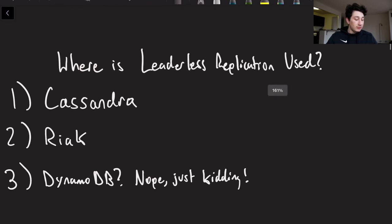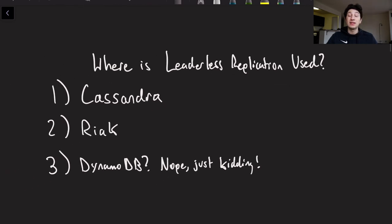So let's move on. Where do we actually use leaderless replication? Again, I'm going to try and make an emphasis on actually pointing out some systems that do these things so you can contextualize these videos a little bit. This is definitely used in Cassandra, that's probably the most popular one. Open source database. Riak is another open source database, very similar to Cassandra.